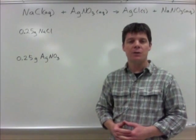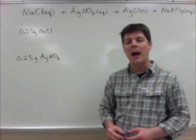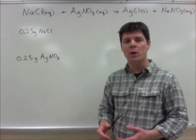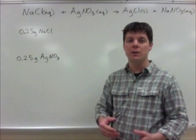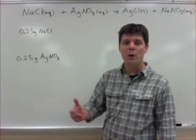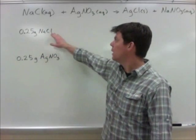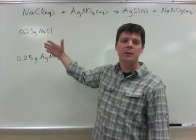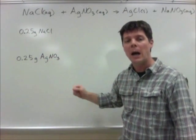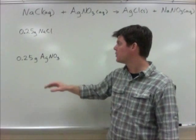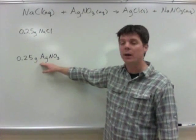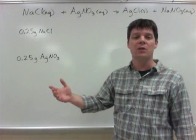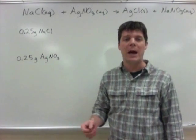One strategy that we can use to find the limiting and excess reactants in a stoichiometry problem would be to calculate how much product is going to be formed based on the starting amounts of the two different reactants. I'm going to perform one calculation starting out with 0.25 grams of sodium chloride to determine how much silver chloride this will allow me to form, and a second calculation based on the starting amount of silver nitrate to determine how much silver chloride that will allow me to produce.